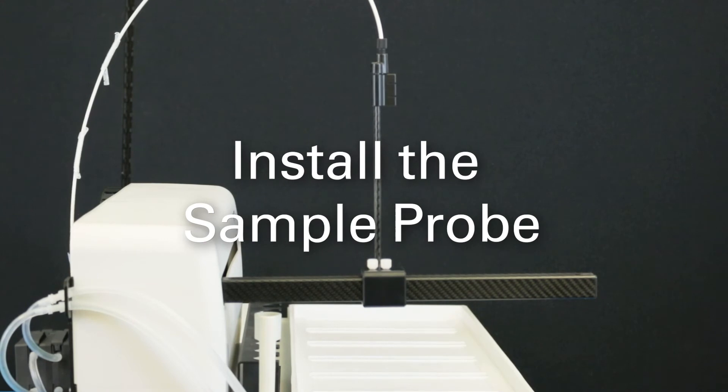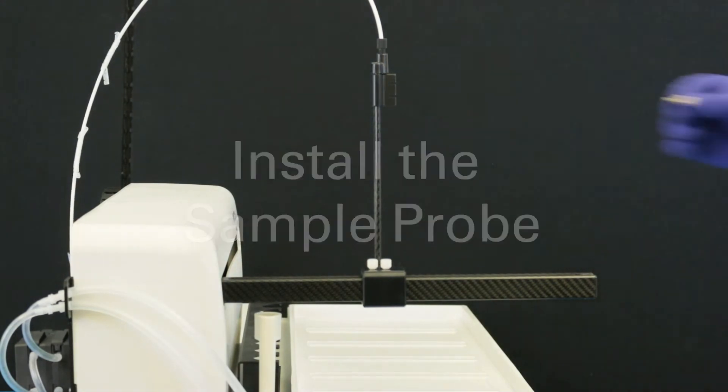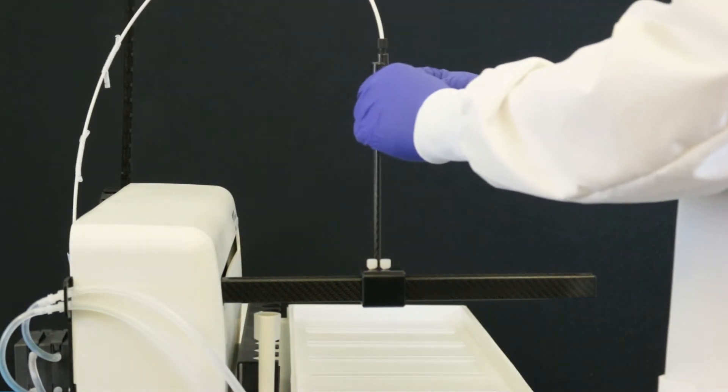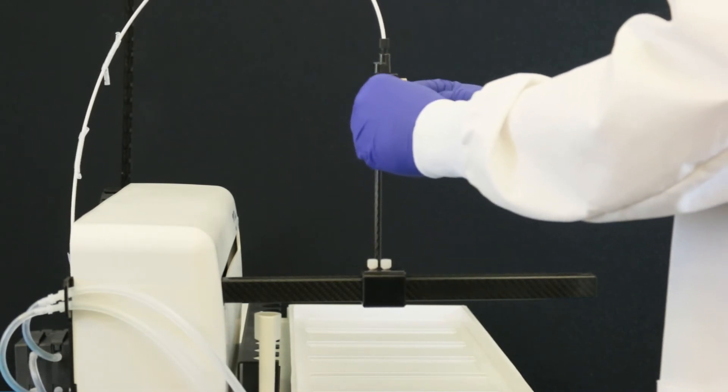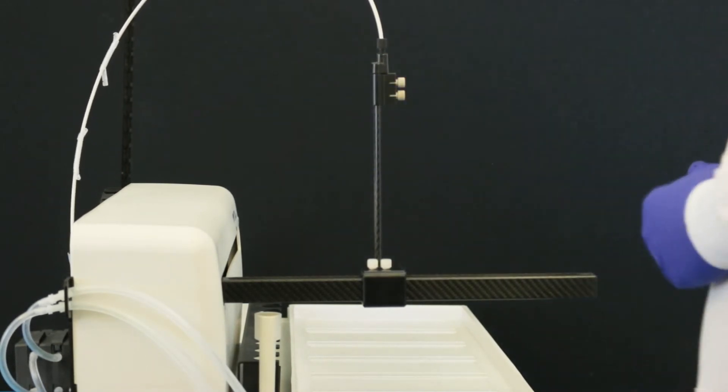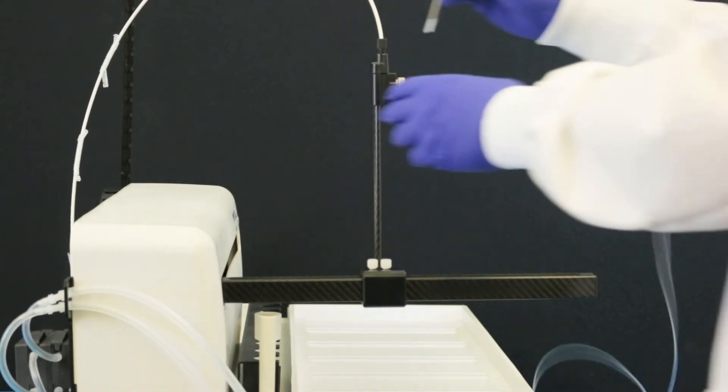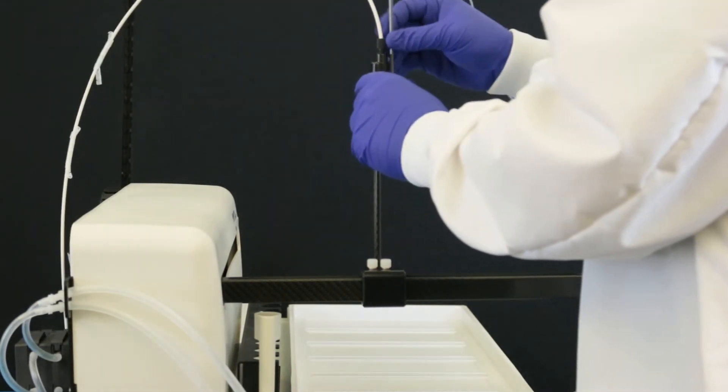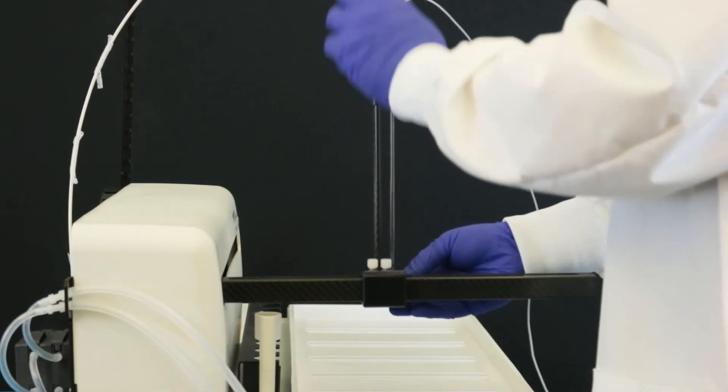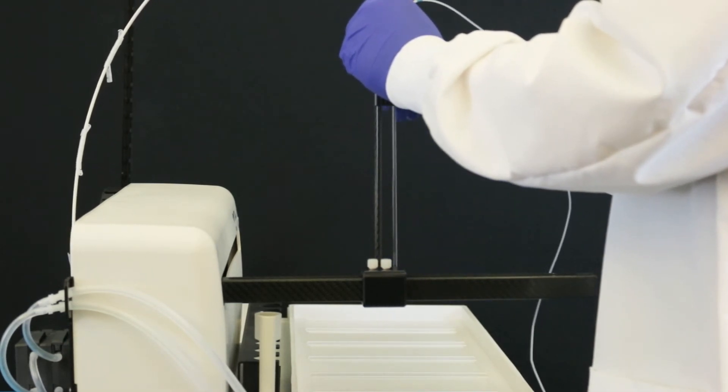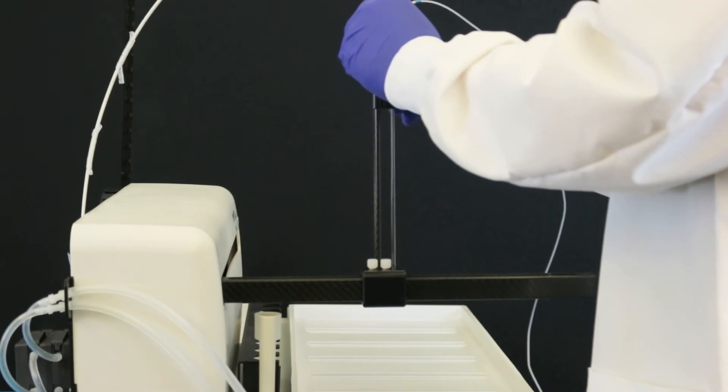Install the sample probe. Insert the sample probe clamps onto the Z axis slider. You may need to loosen the nuts on the clamps before installing the probe. Guide the probe straight down through the Z axis slider until the tip of the probe is level with the bottom of the Z drive. Tighten the probe clamps and secure the sample tubing.